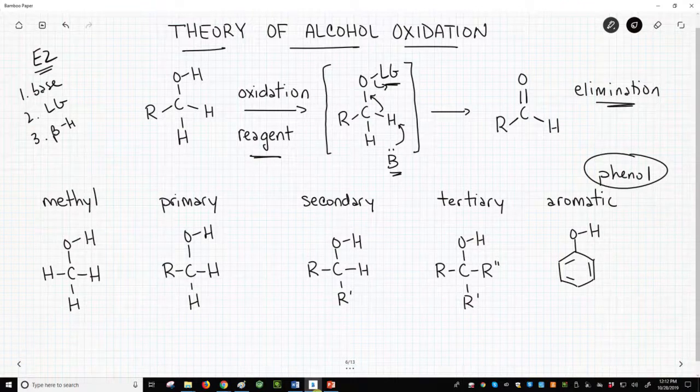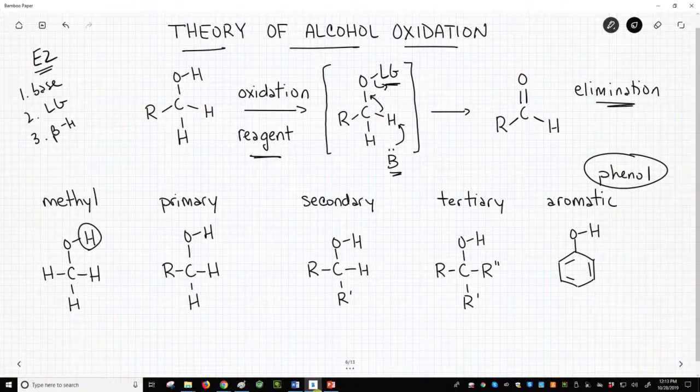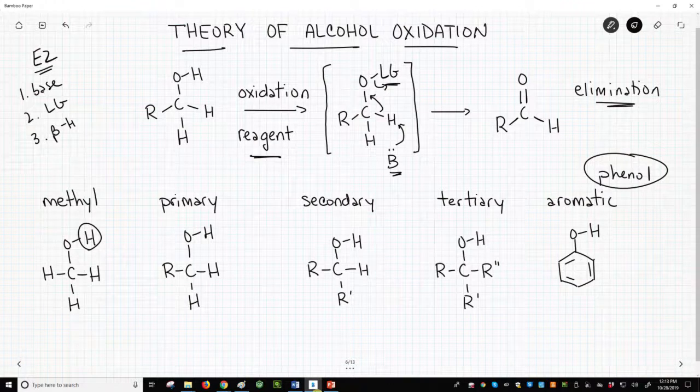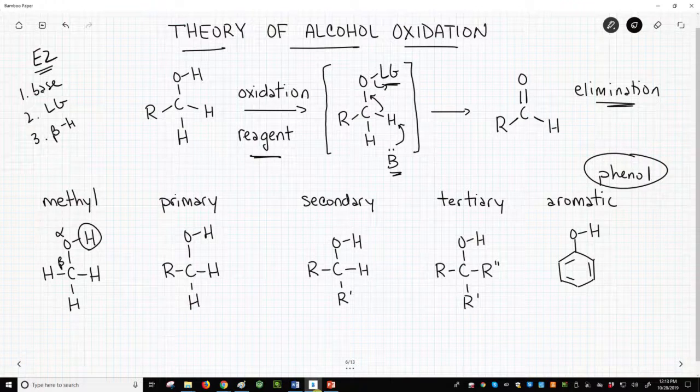Can we oxidize these alcohols under typical conditions? We just need that beta hydrogen. For methanol, if we replace the hydrogen with the leaving group, then yes, we have a beta hydrogen. So the oxygen is attached to the leaving group. It's the alpha position. The carbon is beta, and so we have a beta hydrogen. Methanol could be oxidized.